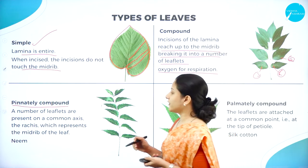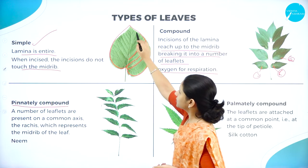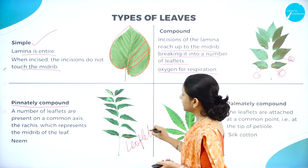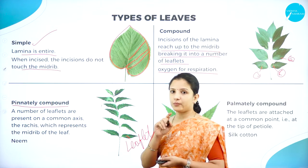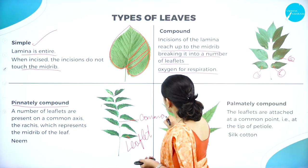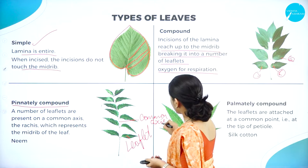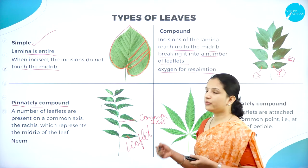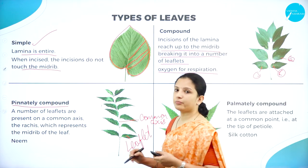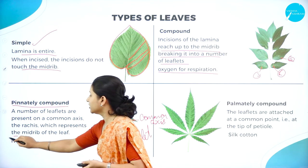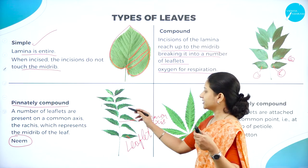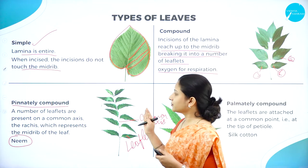In pinnately compound leaves, a number of leaflets are present on a common axis called the rachis. There will be a number of leaflets and they will have their own midribs separately. The best example is neem. The leaflets are present on the common axis — the rachis represents the midrib of the leaf. This is pinnately compound.